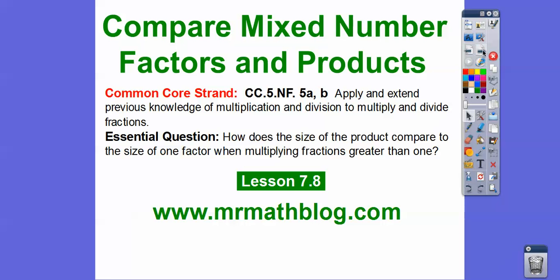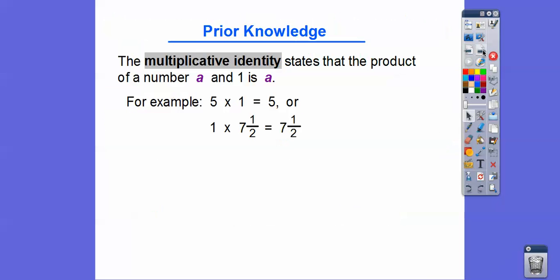Here's our common core strand for our teachers, and our question is: how does the size of the product compare to the size of one factor when multiplying fractions greater than one and also less than one? So we're going to compare when we multiply numbers greater than one and less than one — how does it compare with our factors or numbers?